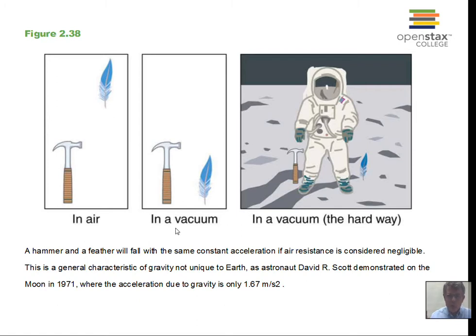When we do vertical motion problems, we often switch the variable X out and replace it with Y for the vertical direction. That's not a requirement, but you may see it. On the Earth, the acceleration due to gravity is minus 9.8 meters per second squared, taking up to be the positive direction. On the Moon, the acceleration due to gravity is minus 1.67 meters per second squared.